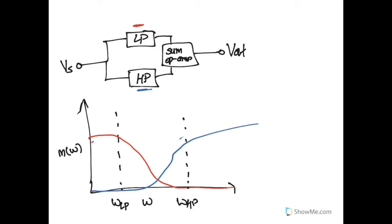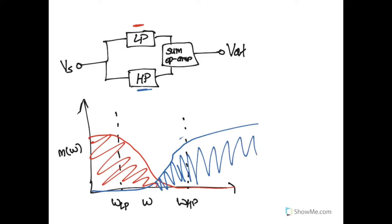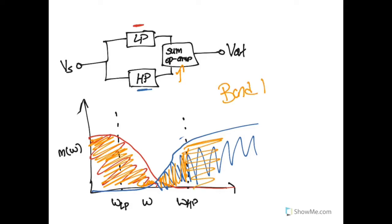Because what's in blue, all these things get passed, and then, or excuse me, in red, and then all these things in blue, and then they get summed together by the op-amp, what the final output that we get is actually the combination of both of these signals, and this ends up being a band-reject filter.